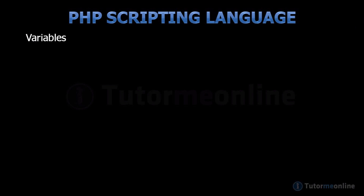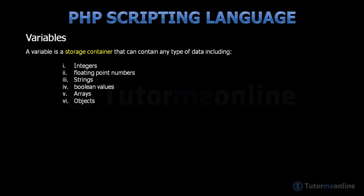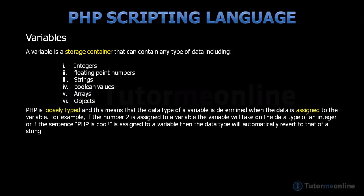Let's have a look at variables — what they are, how they are defined, and what syntax is used to declare a variable. A variable is a storage container that can contain any type of data, including integers, floating-point numbers, strings, boolean values, arrays, and objects. PHP is loosely typed, and unlike many other programming languages, the data type of a variable is determined when the data is assigned to the variable. The data type does not have to be declared before any data is entered into that variable.